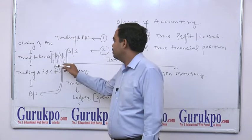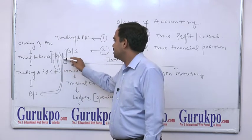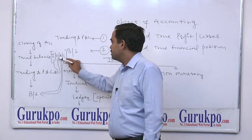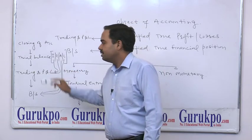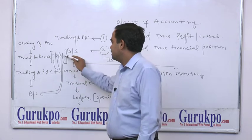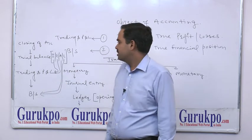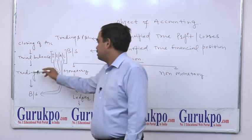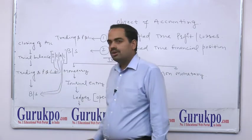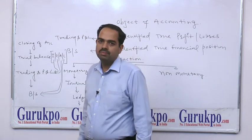Trial balance includes the balance of income, expenses, assets, and liabilities. Income and expenses balances are to be transferred into the trading and P&L account, and assets and liabilities balances are to be transferred into the balance sheet. Trading and P&L account shows profit and loss, and balance sheet shows financial position.